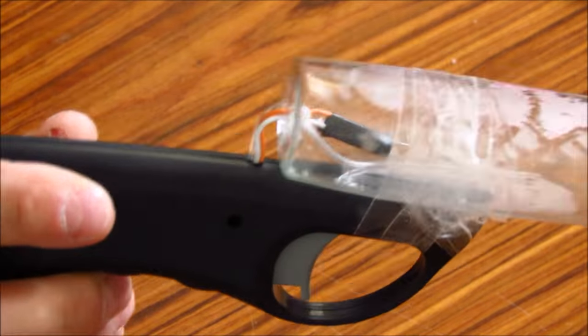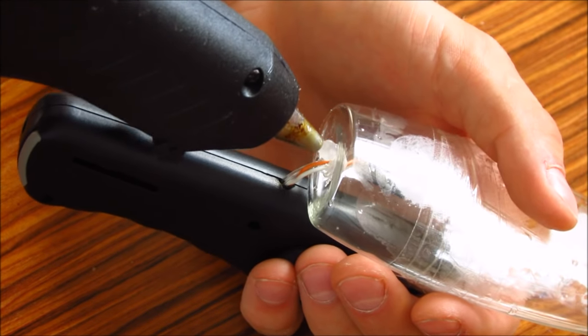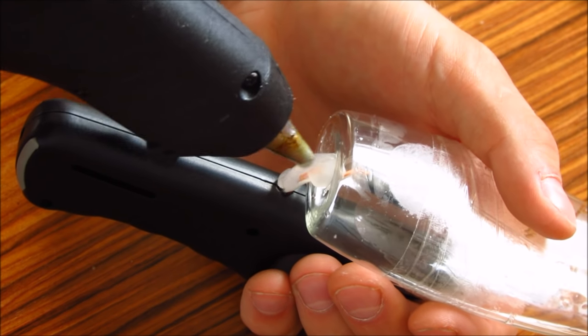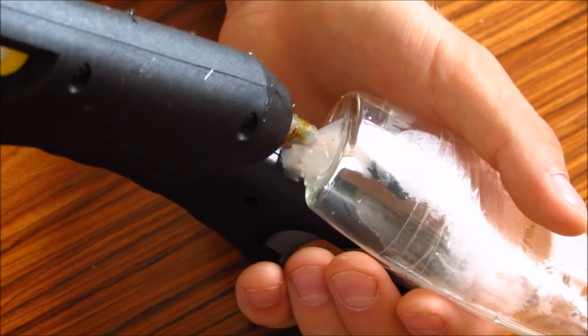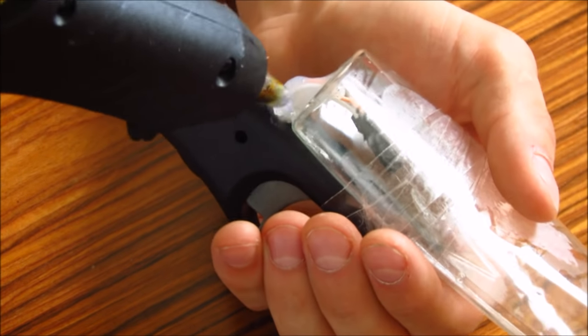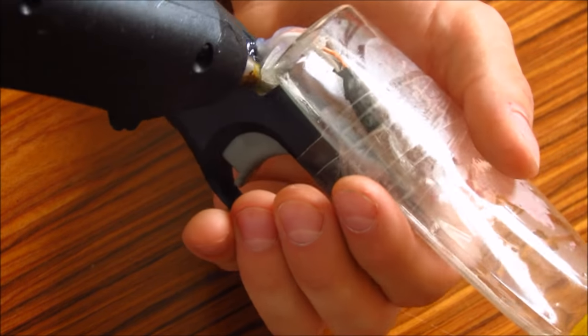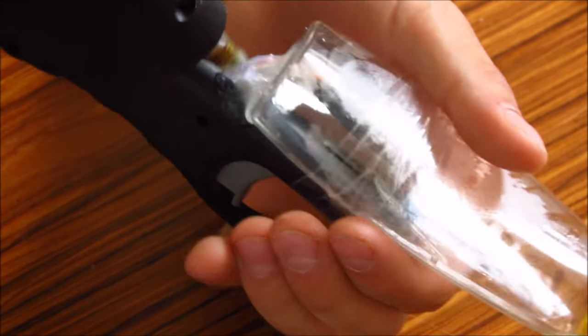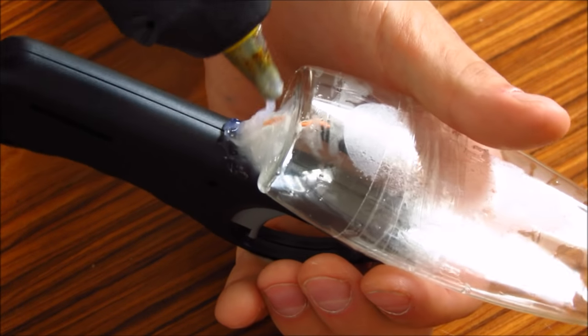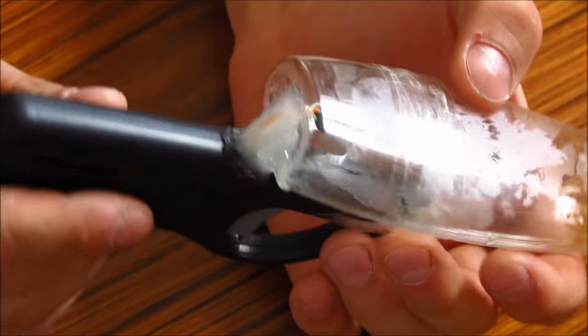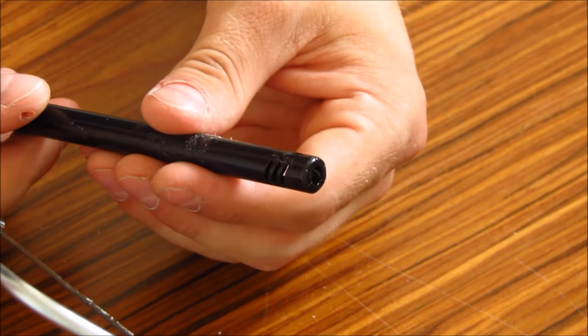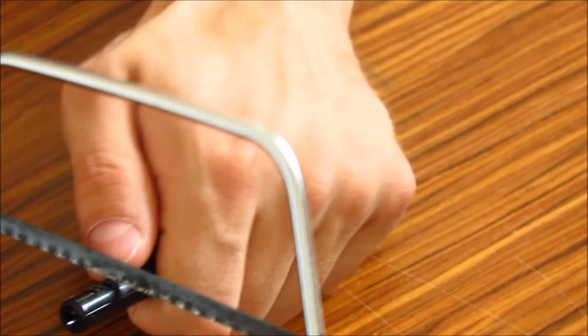When that hole is done, fill it with hot glue and seal it tightly so it doesn't explode or anything. This is a combustion mechanism I'm making right now, so you'll be filling the bottle with gas, and then when you press the trigger, it will ignite.